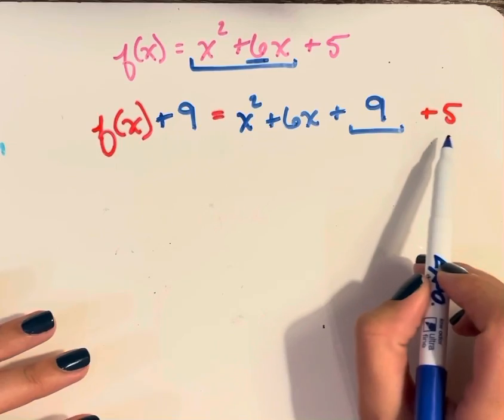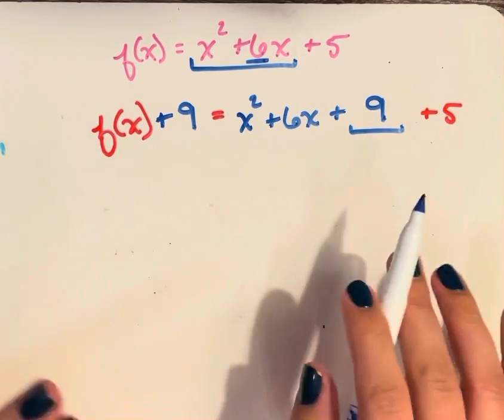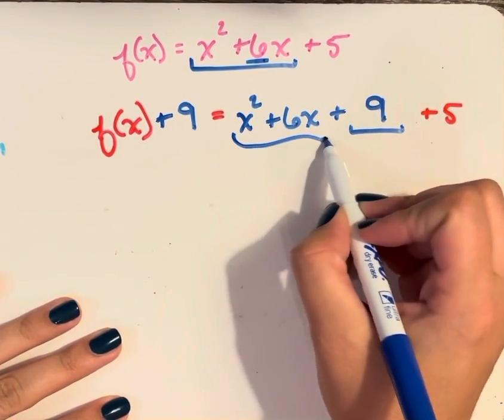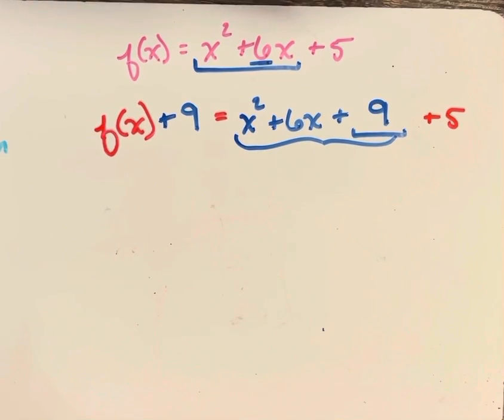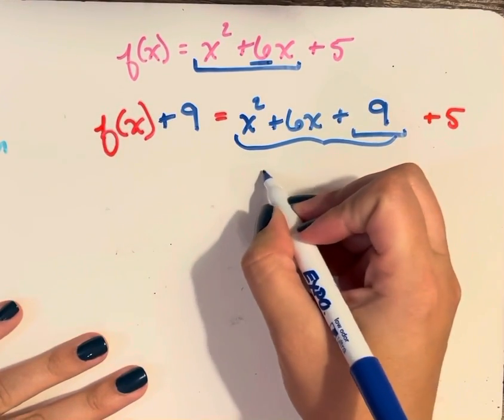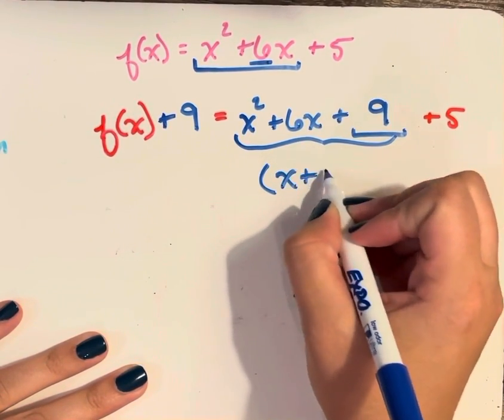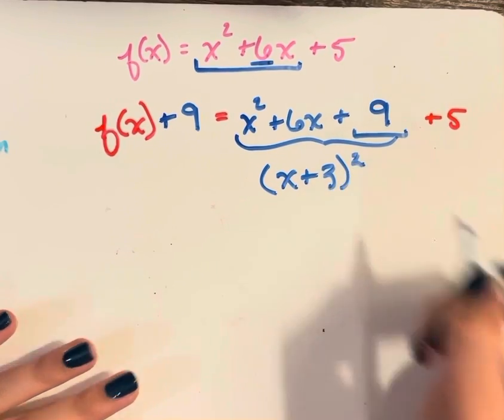Now looking at this, you may really want to add 9 and 5 together. We actually don't want to do that because I'm focusing now on this trinomial. Now this is going to factor as x plus 3 squared.